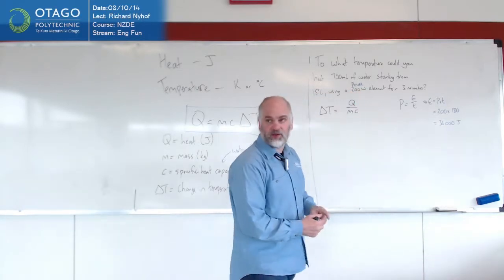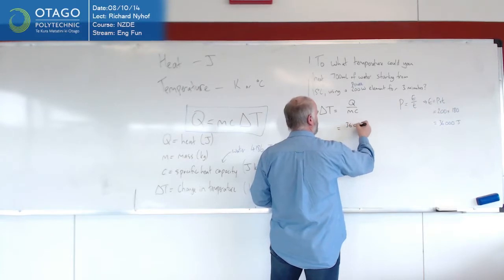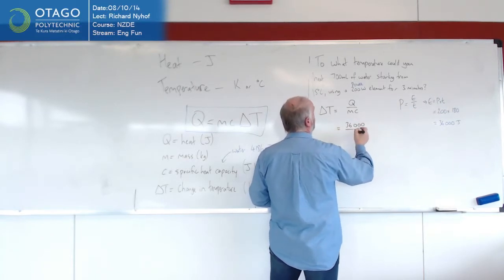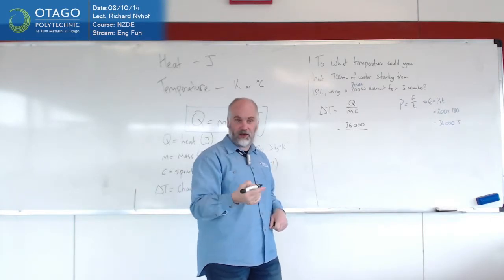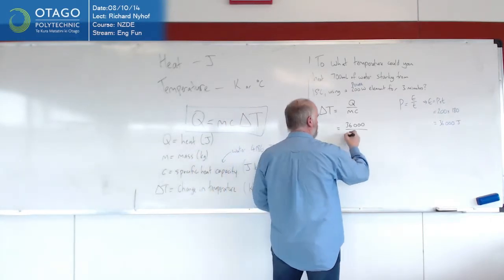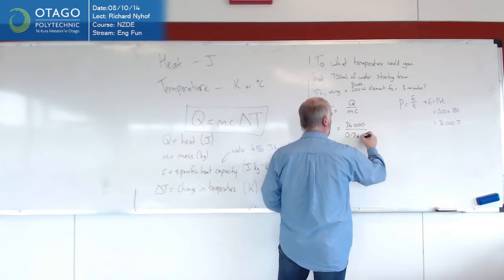So then we can stick that into the equation. So Q is 36,000 divided by M, 700 mils, 0.7 of a litre, so 0.7 of a kilogram, times C, well, it's water again.